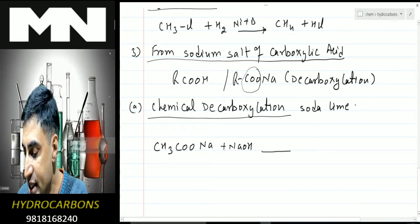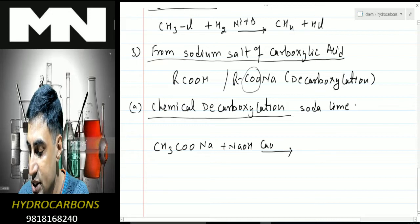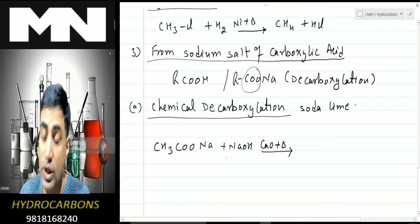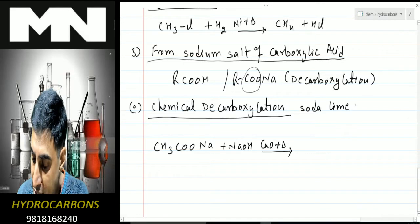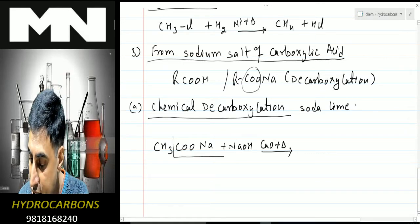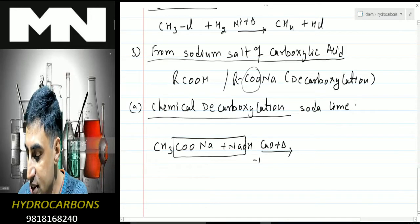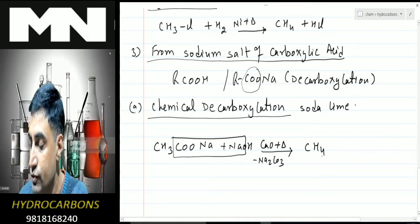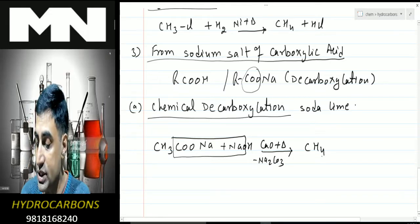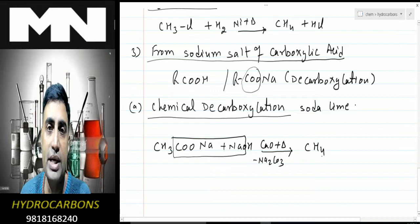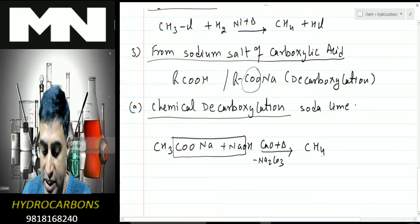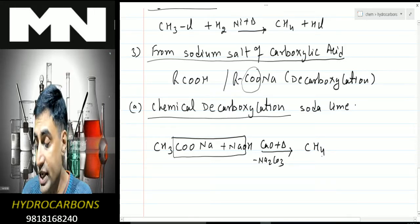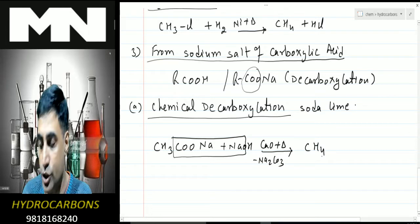Chemical decarboxylation is carried out using soda lime (NaOH + CaO). For example, CH₃COONa (sodium acetate) is reacted with NaOH and heated in the presence of CaO. The carboxylate part comes out as Na₂CO₃, and hydrogen combines with the CH₃ group to form CH₄. This is chemical decarboxylation, producing methane.